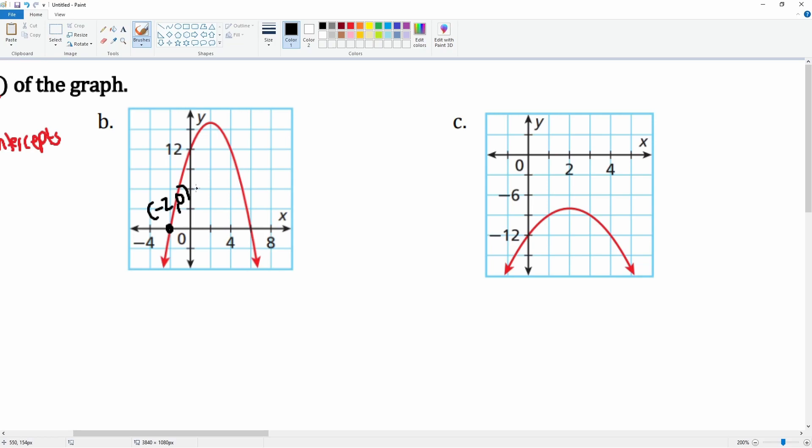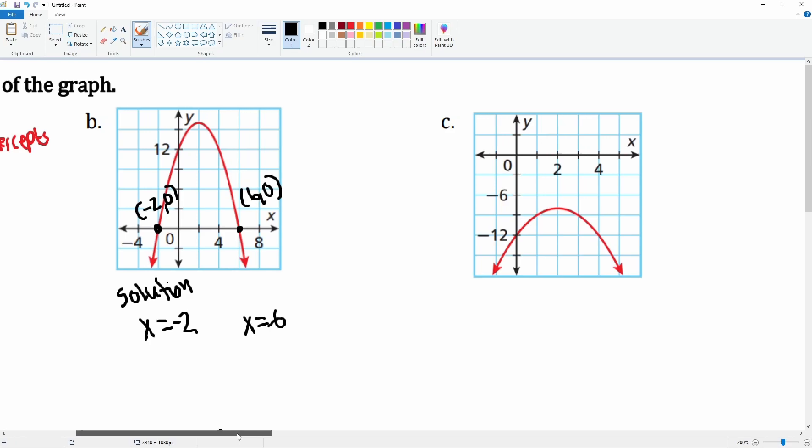So the points are negative two comma zero and six comma zero. The solutions here would just be the x values: x is equal to negative two and x is equal to six would be your two solutions.